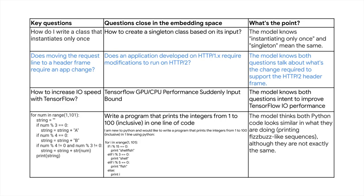Here are examples of the librarian-level semantic understanding by the Embeddings API with Stack Overflow questions. For example, the model thinks the question 'does moving the request line to a header frame require an app change' is similar to 'does an application developed on HTTP 1.x require modifications to run on HTTP 2?' That's because the model knows both questions are about what changes are required to support the HTTP 2 header frame. Note that this demo didn't require any training or fine-tuning with computer programming-specific datasets — this is the innovative zero-shot learning capability of the LLM. It can be applied to a wide variety of industries including finance, healthcare, retail, manufacturing, construction, and media for deep semantic search on industry-focused business documents.